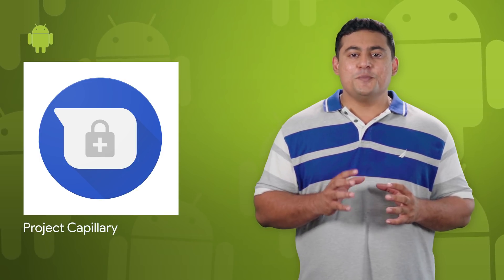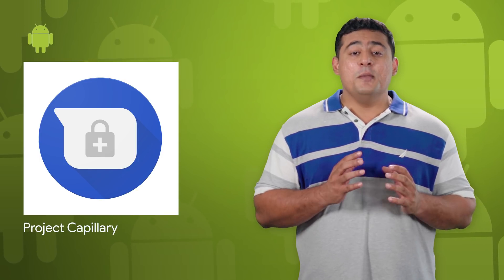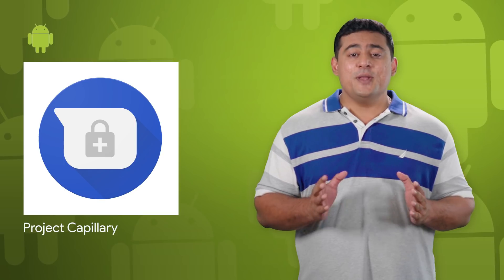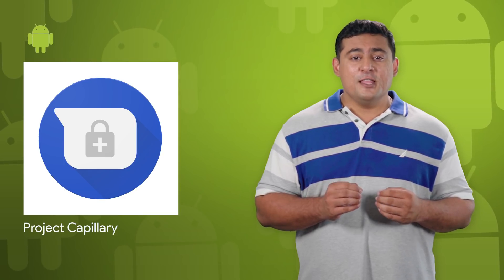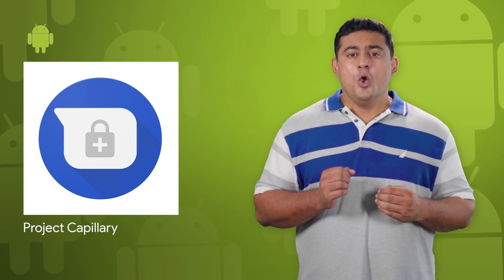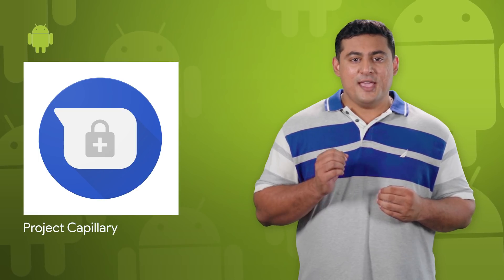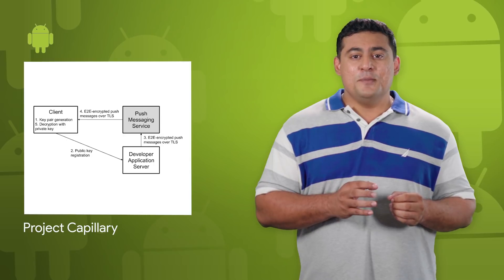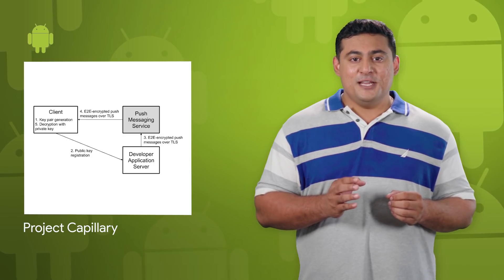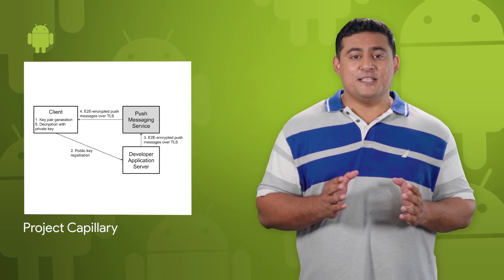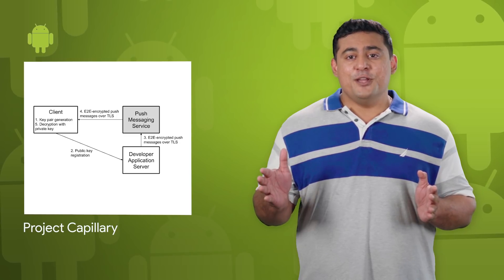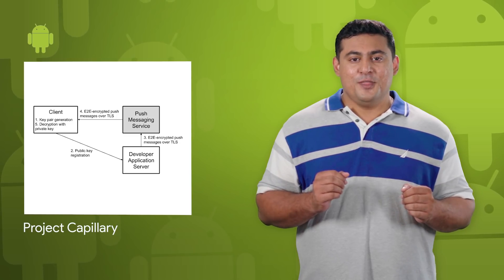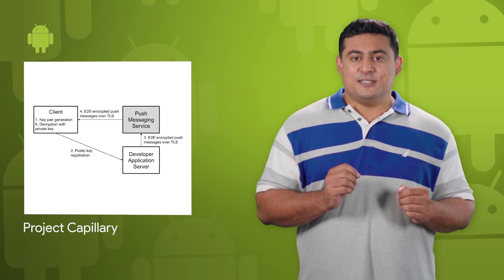But implementing such end-to-end encryption has historically required significant technical knowledge and effort, which is why we're excited to announce the Capillary Open Source Library to greatly simplify the implementation of end-to-end encryption of push messages between the developer server and the user's Android devices. For more details and to get started, take a look at the post.